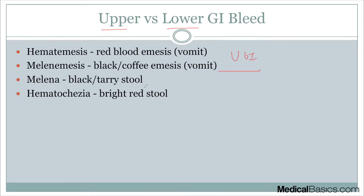The next one is going to be melena. Typically, this is also going to be an upper GI bleed — it has to travel through the intestines for a very long time before you can have more of this black, tarry colored stool. Hematochezia we like to think of more as our lower GI bleed. It's more of something that's closer to the exit, so it doesn't have time to really change colors and become darker.